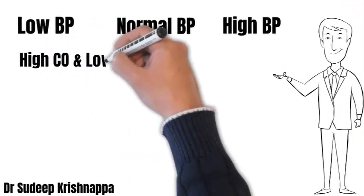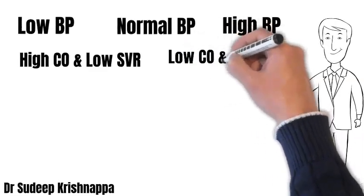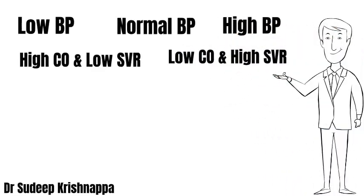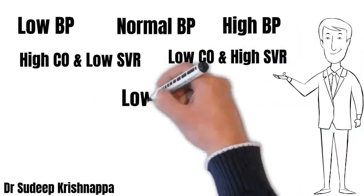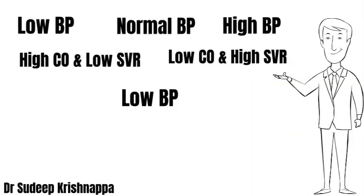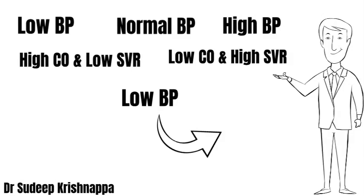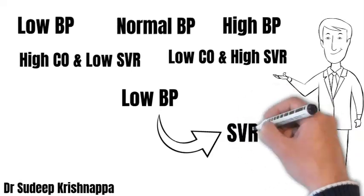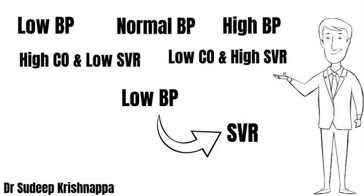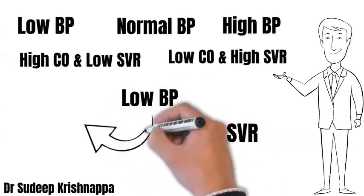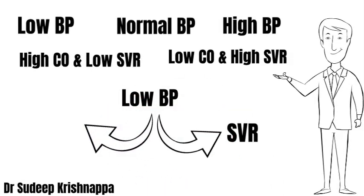When BP is low, it can be either because cardiac output is low or vascular resistance is low. So when we are looking at a patient with low blood pressure, the first step is to determine whether it is a problem with cardiac output or a problem with vascular resistance that is causing the low blood pressure.